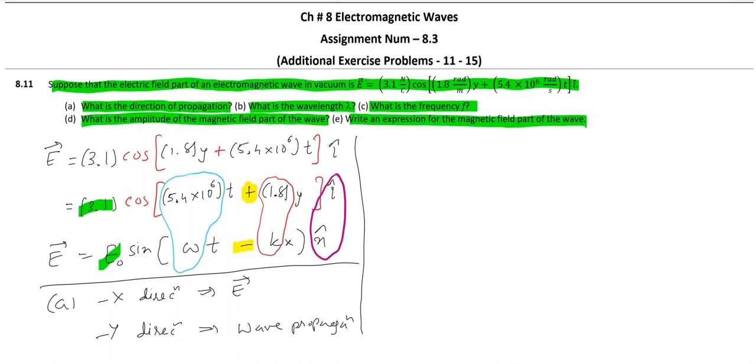For the second one, that is b, once you have identified the terms, it is very easy. k is equal to 2π by lambda. And what is k value? k is 1.8. Okay, from the equation we can identify k and that we will get is lambda.